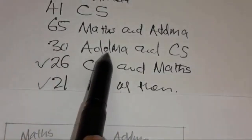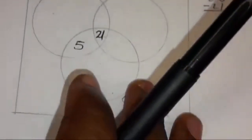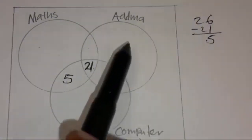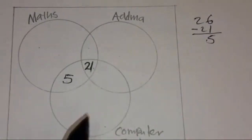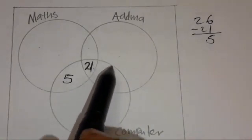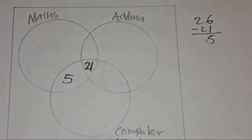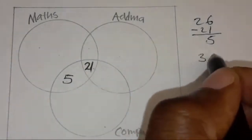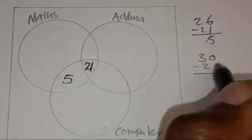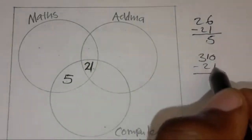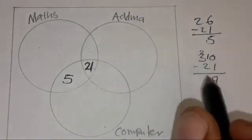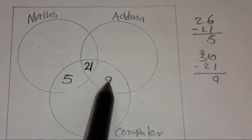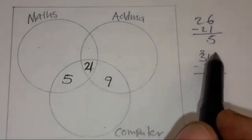Next, 30 teachers taught ADMA and computer science. You cannot put 30 here either, because in the intersection of ADMA and Computer Science you already have 21. So you say 30 minus 21, which gives 9. Here we have 9, so that 9 plus 21 gives back 30.